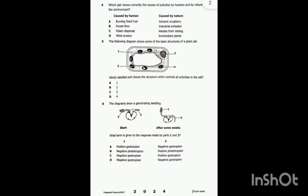The diagrams show a germinating seed. What term is given to the response made by parts one and two? This question is based on geotropism. Geotropism is the growth response of a plant to gravity.